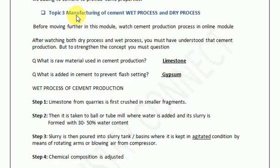In this video we will understand the production process of cement. There are two processes: one is known as the wet process and the other is known as the dry process. As the name suggests, the wet process uses more water content, whereas in the dry process less water content is used during production.